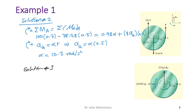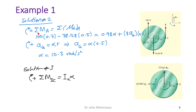Recalling that the sum of moments about the IC equals I_IC·α, and since the IC is the same as point A, the left-hand side is the same: 100 × 0.7 − 78.48 × 0.5.